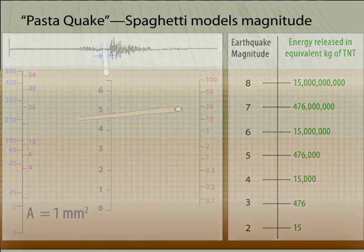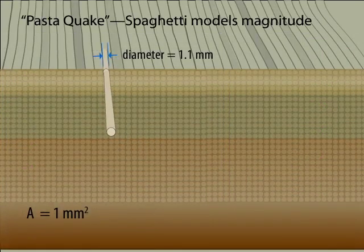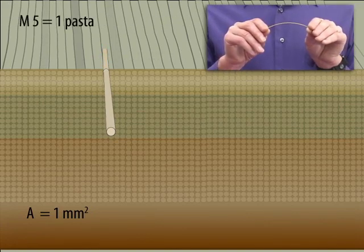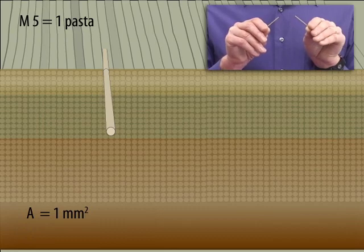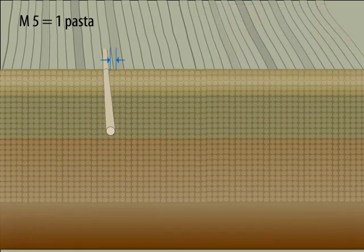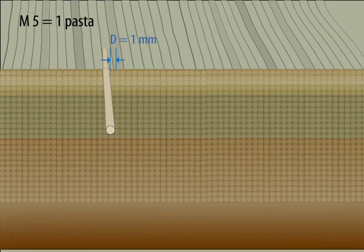To understand the scaling, we'll look at the effects of the rupture area by using pasta as a model for magnitude. The cross-sectional area of a strand of spaghetti is about 1 square millimeter. When you break the noodle it makes an earthquake — let's say magnitude 5 for our model. Mu is constant for all strands of pasta, and for D we'll use 1 millimeter of displacement across the fault. So here we see the pasta break and move laterally 1 millimeter.